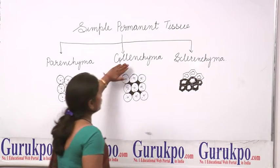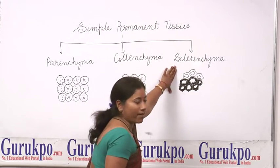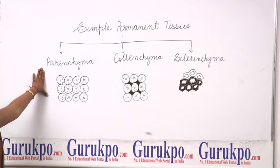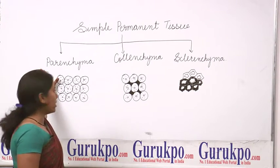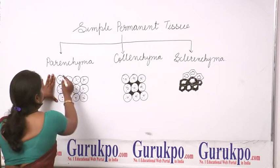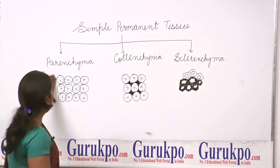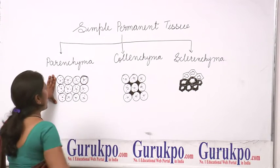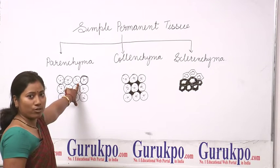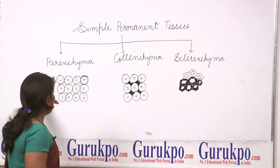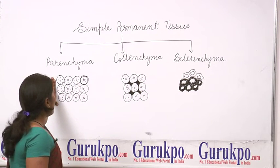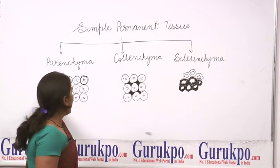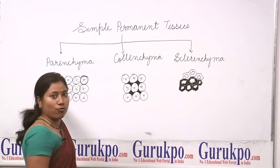First, Parenchyma. Parenchyma tissue is made up of isodiametric living cells. These cells have thin cellulosic deposition on the cell wall and have intercellular space. This tissue is present in the floral part of the plant, cortex, pith, and endodermis of the seed. Its main function is to store food.